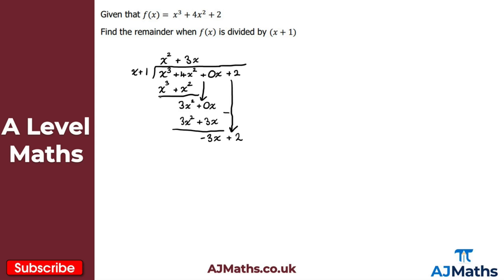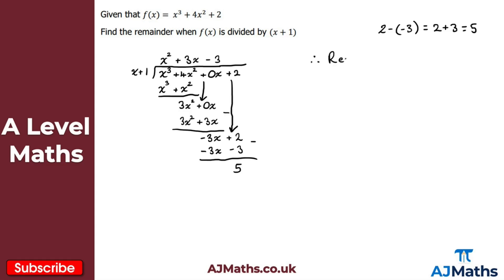Bringing down the 2 gives minus 3x plus 2. Dividing minus 3x by x gives minus 3. Multiplying minus 3 by x plus 1 gives minus 3x and minus 3. Subtracting: minus 3x cancels, and 2 minus minus 3 is the same as 2 plus 3, which gives 5. So the constant term at the end is 5 — that is our remainder. Therefore, when f(x) is divided by x plus 1, the remainder is 5. That brings us to the end of this video on dividing polynomials; in the next video we'll look at the factor theorem.